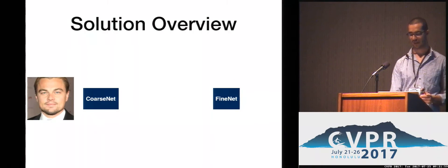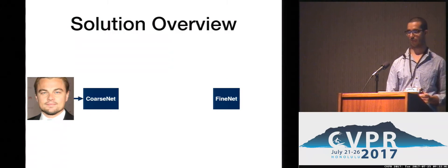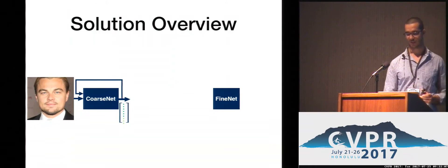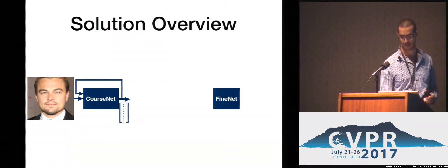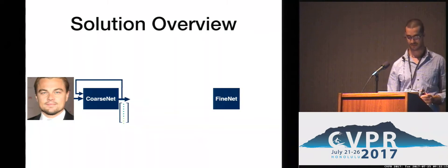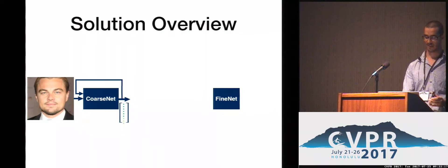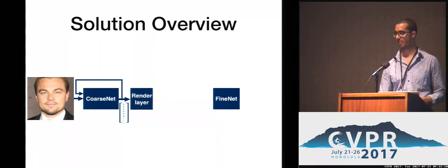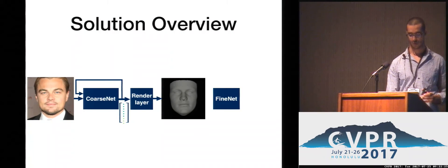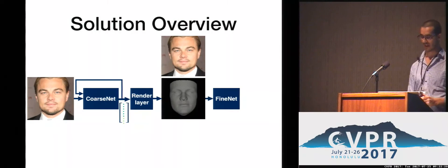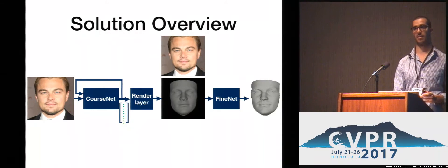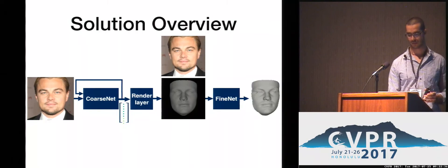Given a facial image, we propagate it through coarse-net to recover the 3DMM and expression representation, as well as the pose. This network is iterative, so we apply it multiple times until convergence. Since the 3DMM does not capture fine details, we generate a depth image using a fully differentiable rendering layer. We then take the input image along with the coarse estimation of the depth map and put it into fine-net to produce a high-detailed depth map containing fine details.